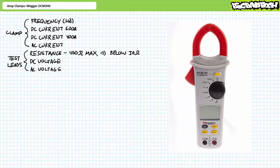Beyond DC current measurement, the Mega DCM340 includes additional functions found on most portable DMMs, including AC voltage, DC voltage, resistance and continuity, AC current and frequency. Let's do a quick demonstration of each function and call it a day.